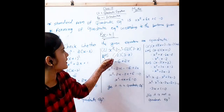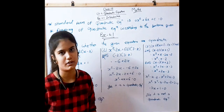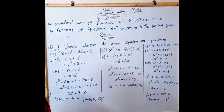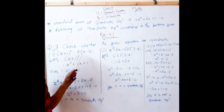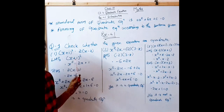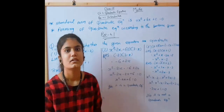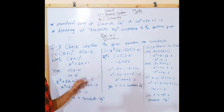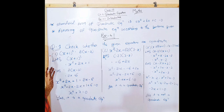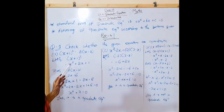We have to check whether the given equations are quadratic or not. Question number 1: (X + 1)² = 2(X - 3). We will solve this by equating the left-hand side of the equation.